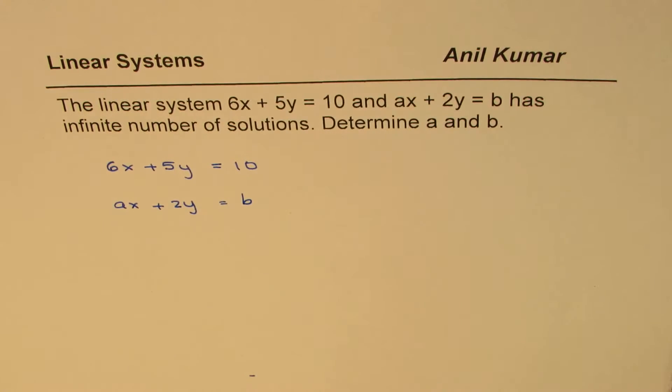So two linear equations form a linear system. We want infinite number of solutions. Now what does that mean?